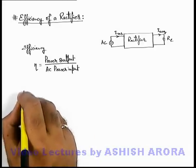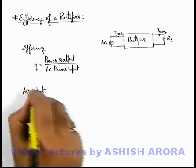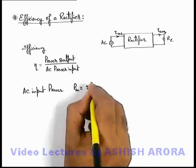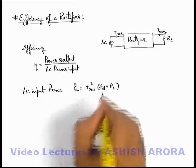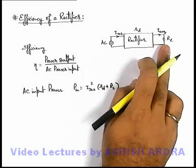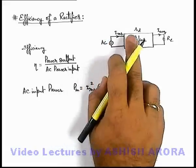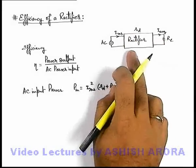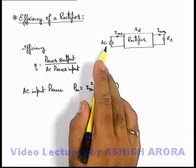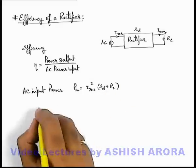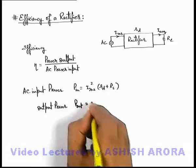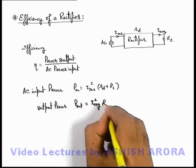So in this situation, if we calculate the rectifier efficiency, this efficiency is given by the symbol eta, which can be written as power output by AC power input. The AC input power can be written as I_rms squared times (R_d + R_L), where R_d will be the resistance of the diode. For input AC, the diode resistance and the load resistance both appear connected in series. The output power is supplied only to the load resistance, so it can be written as I_average squared times R_L only.